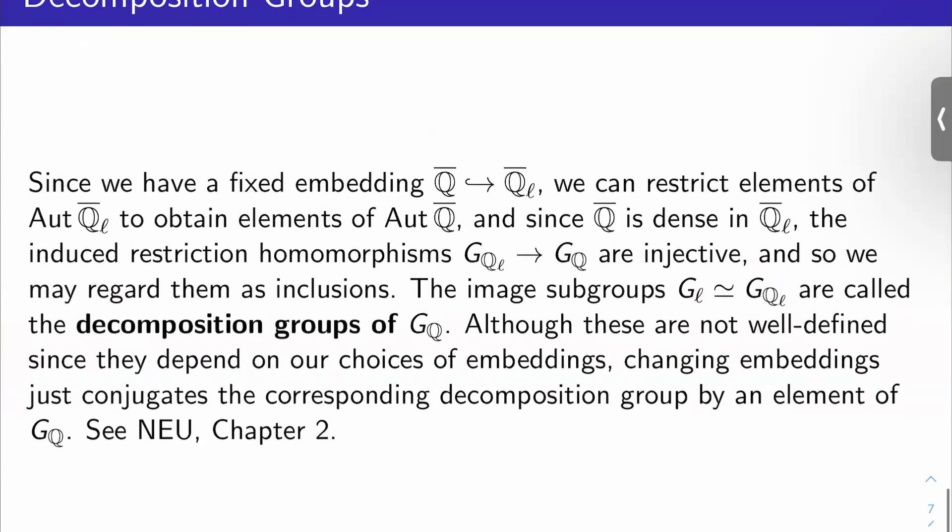Now, you have a fixed embedding Q-bar into Q-bar_ℓ, right? That means you can restrict elements of Q-bar_ℓ to obtain elements of Q-bar. But Q-bar is dense in Q-bar_ℓ. And so it turns out that means, well, although this is just kind of clear, the induced restriction homomorphisms you get here by doing these restrictions from G_{Q_ℓ} to G_Q are injective.